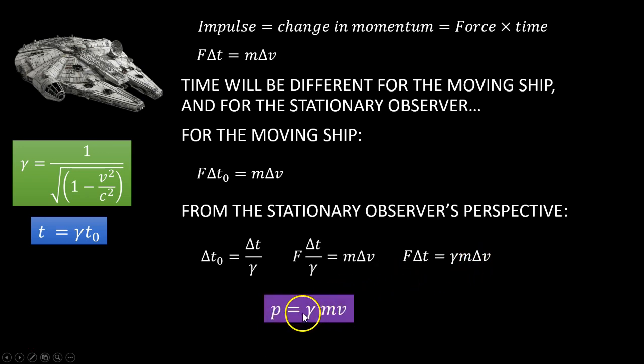That gives us a gamma factor involved in the momentum equation, or which we could say that momentum, relativistic momentum, is equal to the gamma factor multiplied by classical momentum.